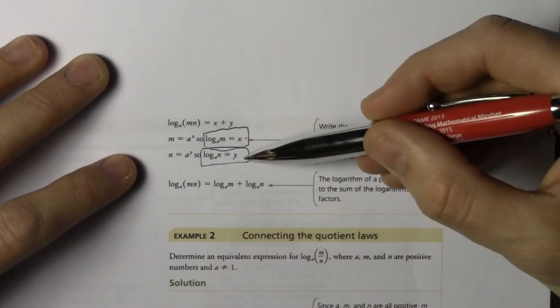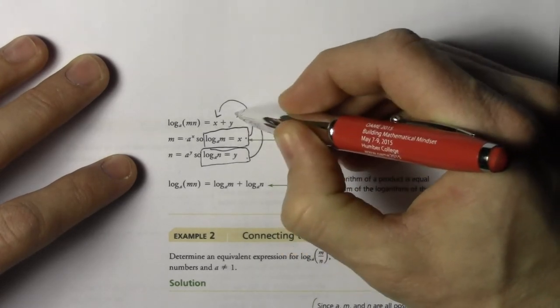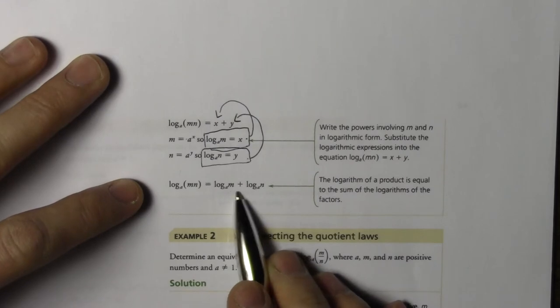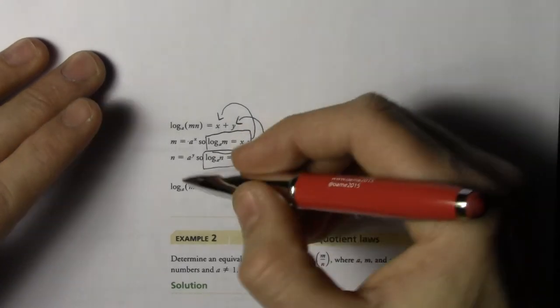All right, so if that's the case, that's equal to x, that's equal to y. Subbing these two in to our previous formula, we get log m n is equal to log a m plus log a n. We sub that in for x and that in for y. Okay? So here is our finished product.